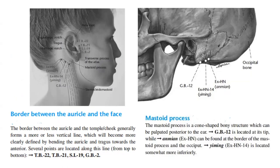Next, we have the border between the auricle and the face. This border generally forms a more or less vertical line, which becomes more clearly defined by bending the auricle and tragus anteriorly. Several points are located along this line from top to bottom: Triple Burner 22, Triple Burner 21, SI19, and GB2.